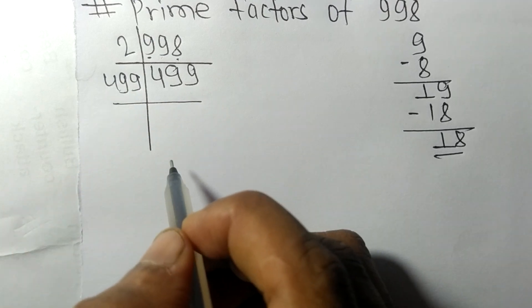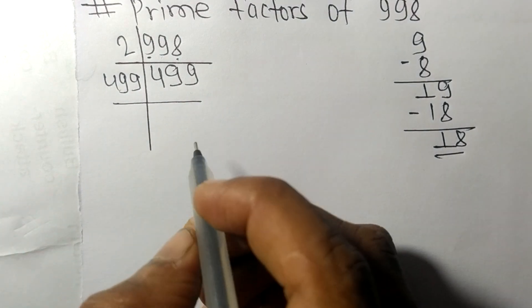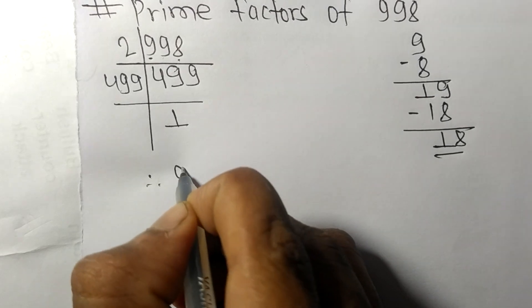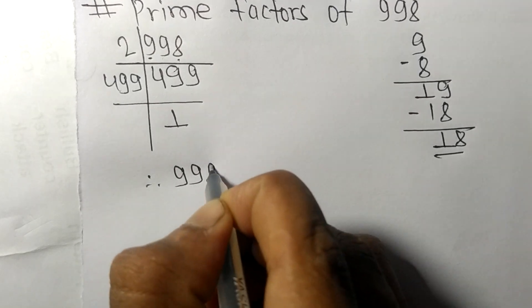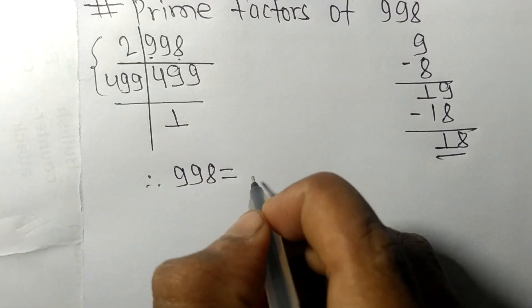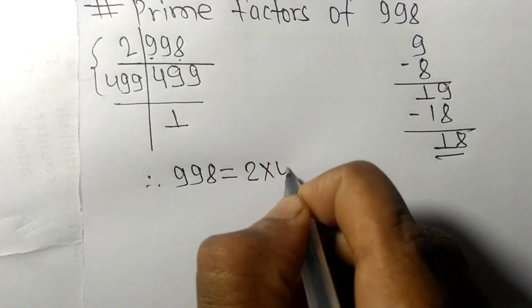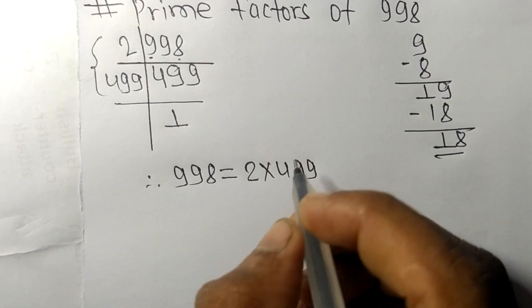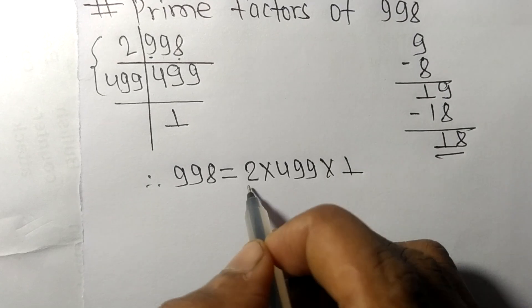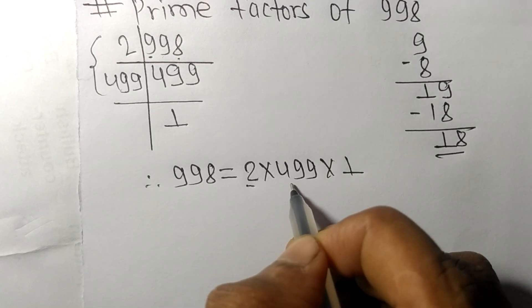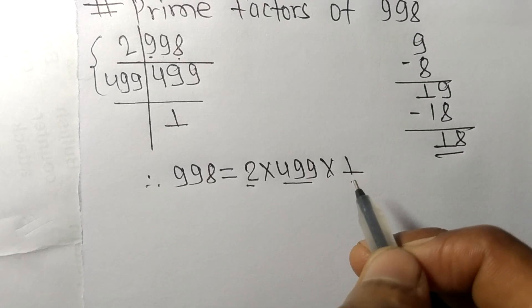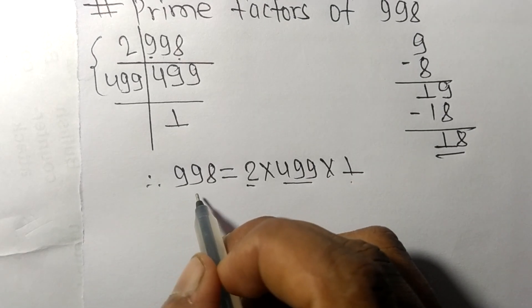On dividing by 499, we get 1. Therefore, 998 is equal to 2 times 499. So 2, 499, and 1 are the prime factors of 998.